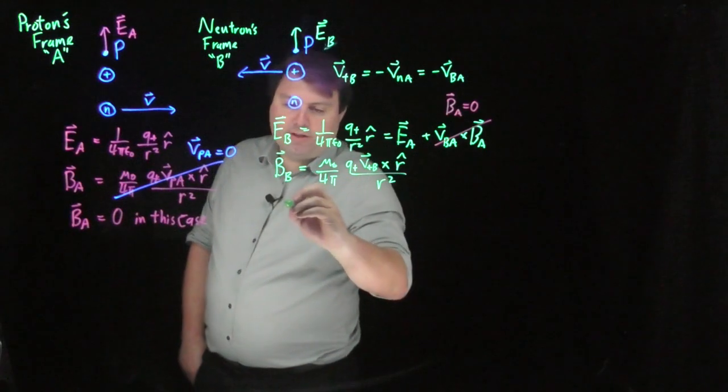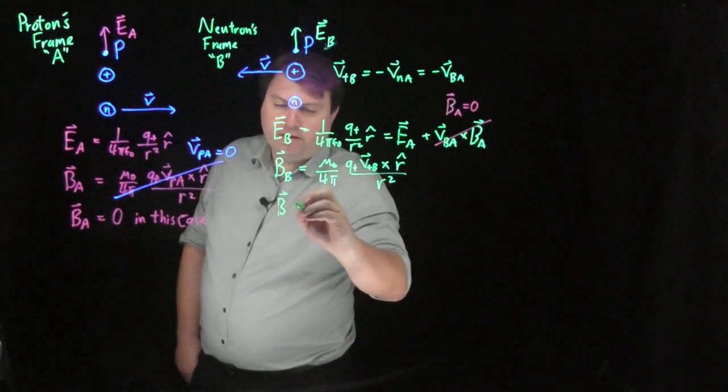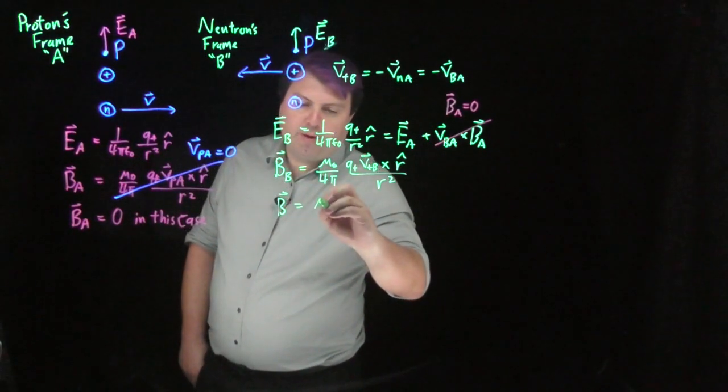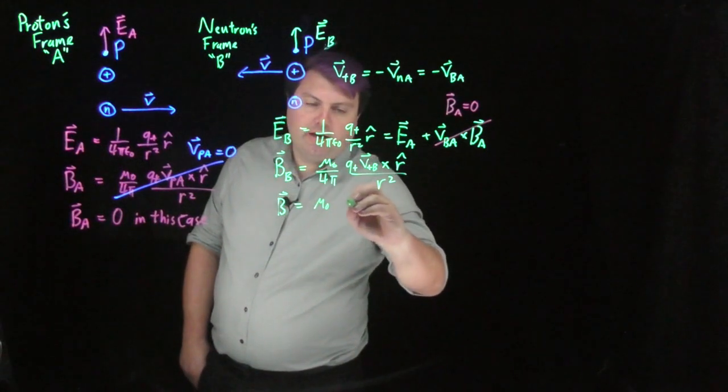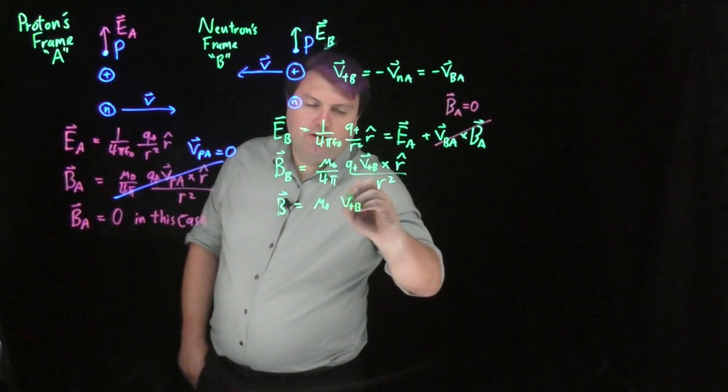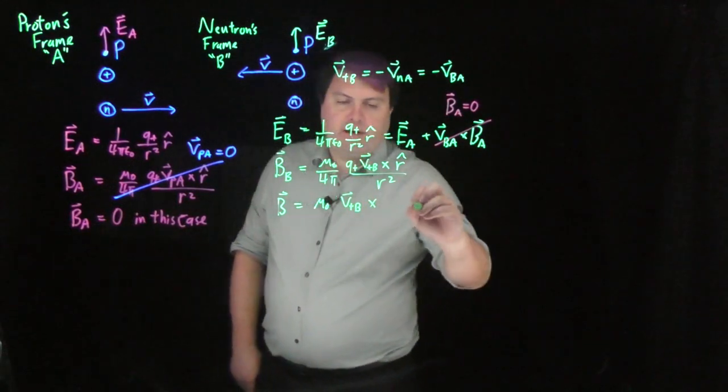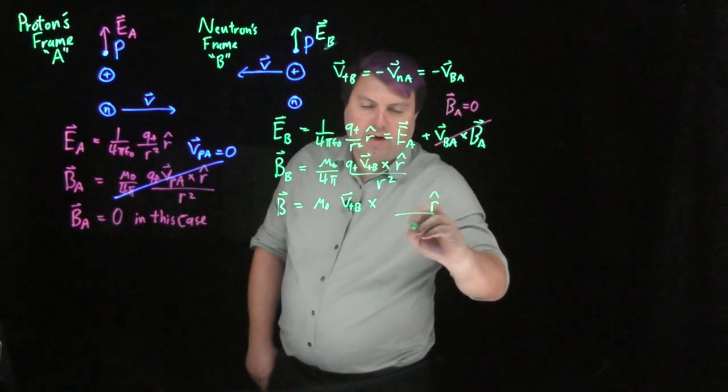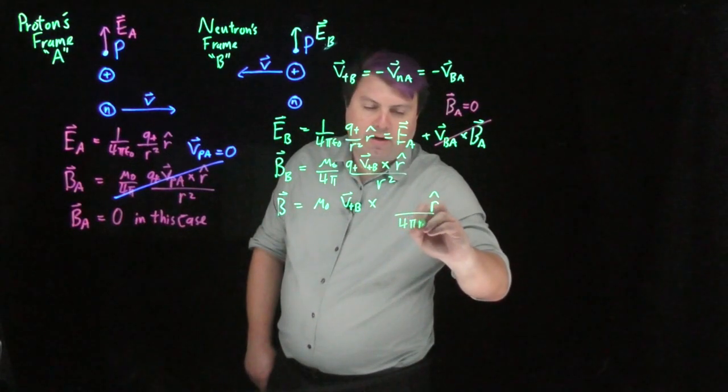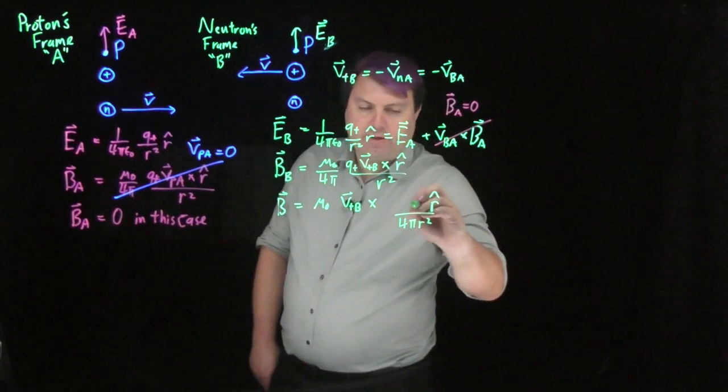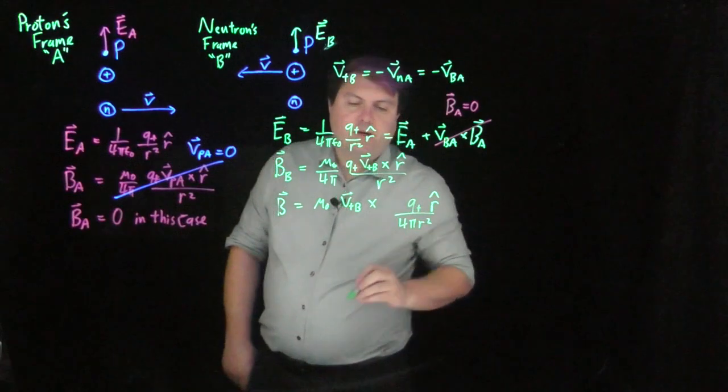So we can arrange this just a little bit differently. I can have my mu naught here. I can then have my V plus B and cross it with everything else left over. I have my r hat here. I'm dividing by 4 pi r squared, and then I just have my Q plus here.